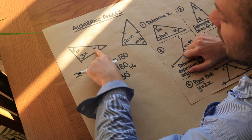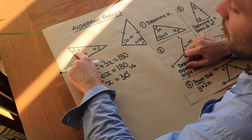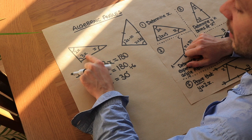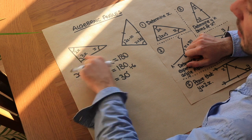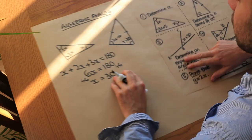That means the first angle is 30, the second angle is 2x which is 60, and the third angle is 3x which is 90. So it's a 30-60-90 right angle triangle.